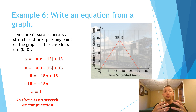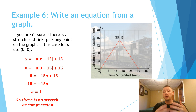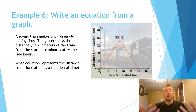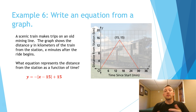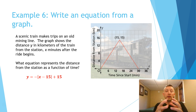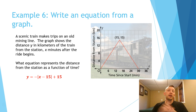Going back to the original question: what equation represents the distance from the station as a function of time? The equation is y equals negative absolute value of x minus 15, plus 15. So putting it all together, that's what we've learned in this lesson. Good luck as you work on your homework assignment.